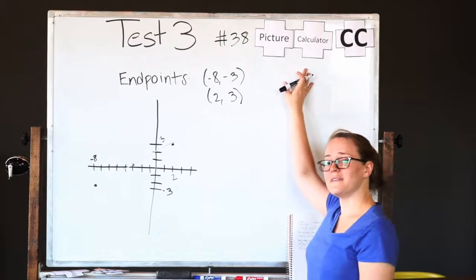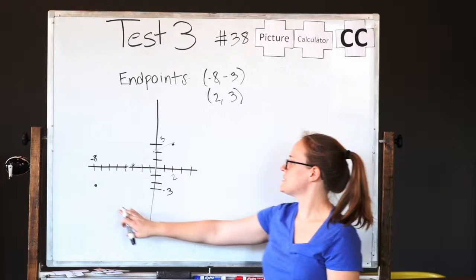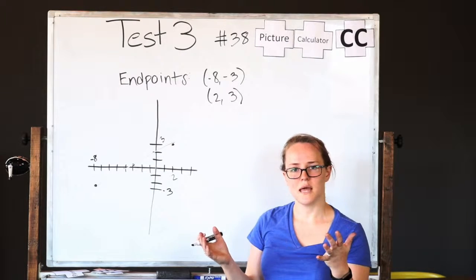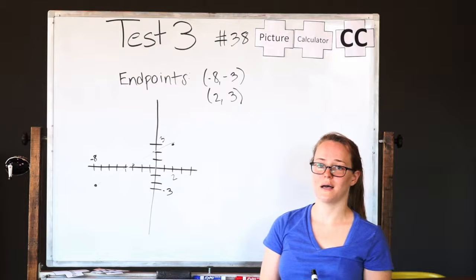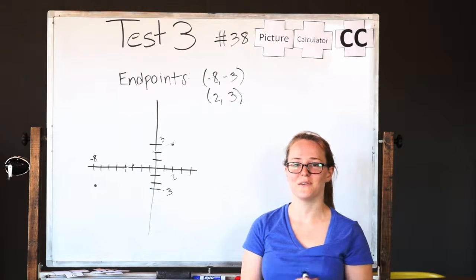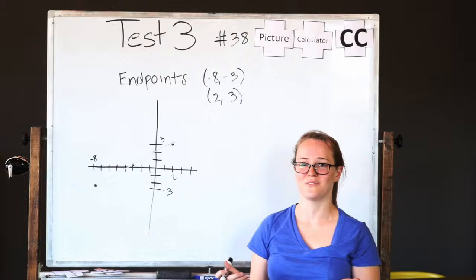Lastly, if you are a fan of your calculator, feel free to plug these endpoints in. And then you can just examine that on your calculator and find that the midpoint is negative 3 that way as well. So this one's all about what works well for you. But no matter what, the right answer is G, which is negative 3.